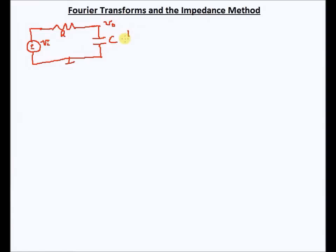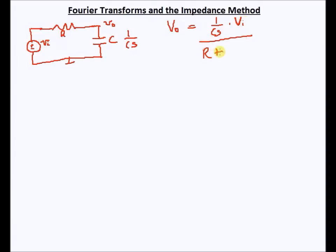We replaced the capacitor with an impedance of value 1/(Cs). R remained the same and we used complex amplitudes. Using the voltage divider formula, capital Vo equals 1/(Cs) times Vi, divided by R plus 1/(Cs). If we simplify this, we get Vo equals Vi divided by (1 + RCs).